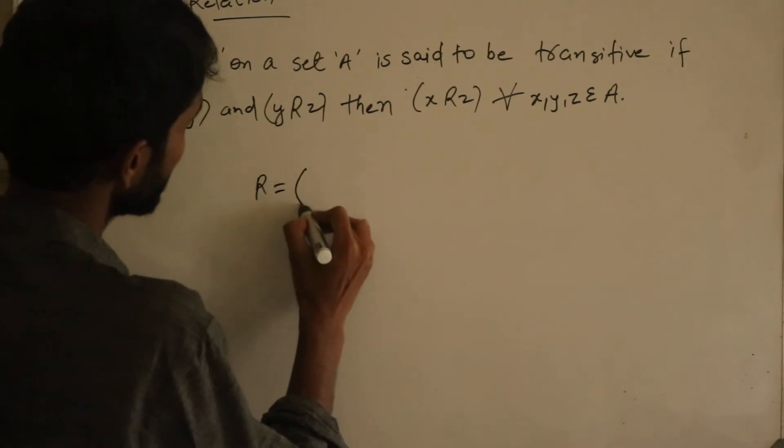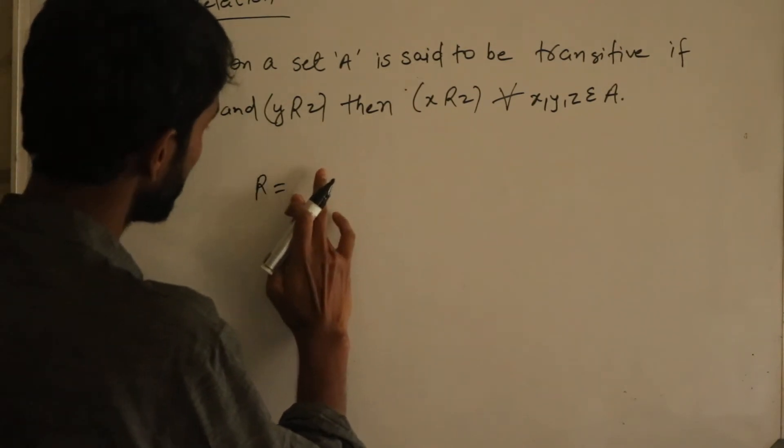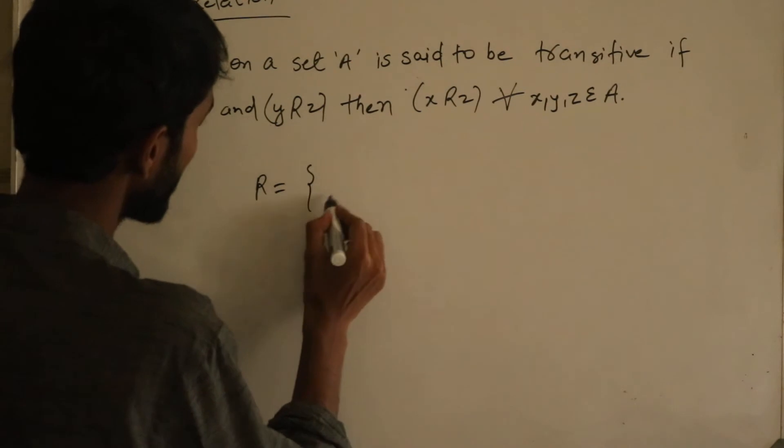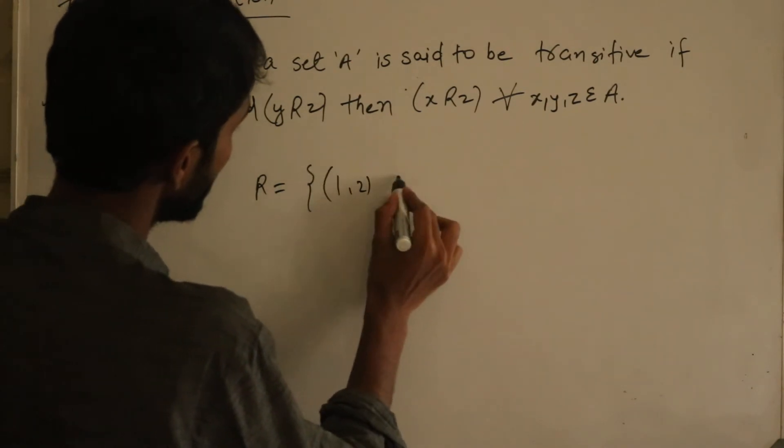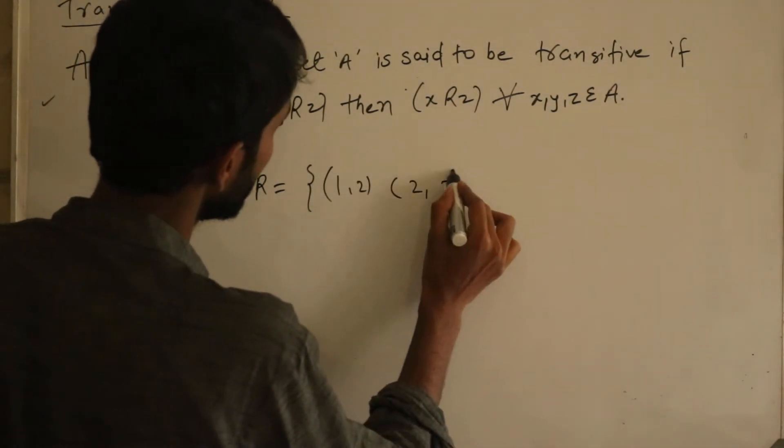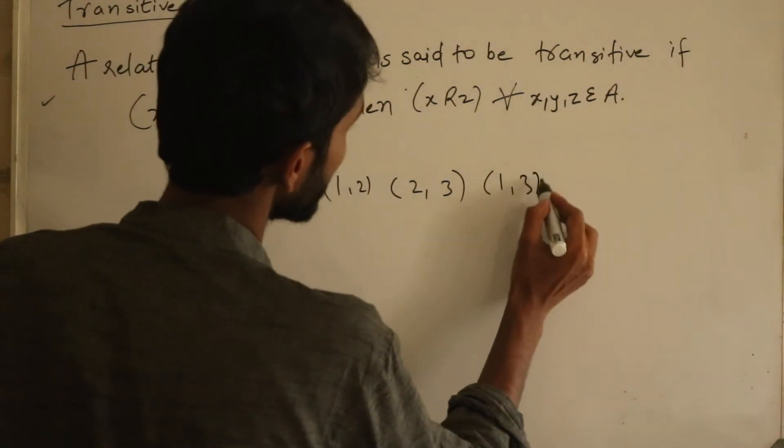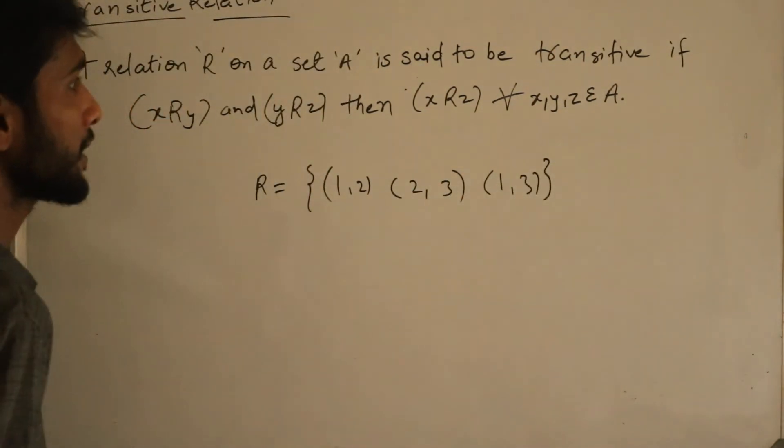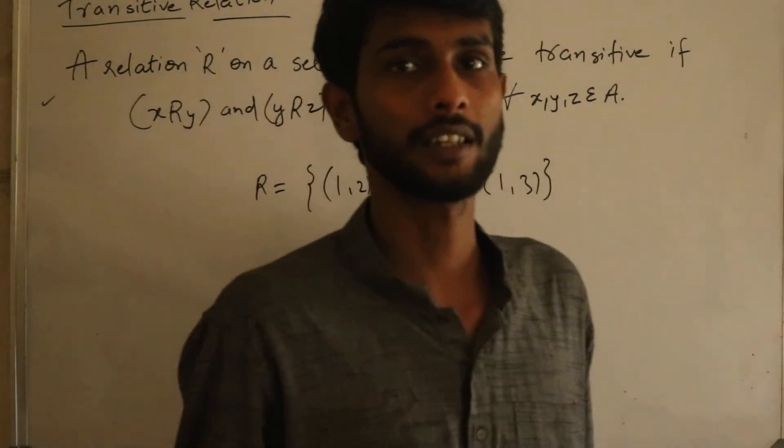this relation having (1,2) and (2,3), then (1,3) should be there in the relation. In that relation you can call transitive relation, otherwise not.